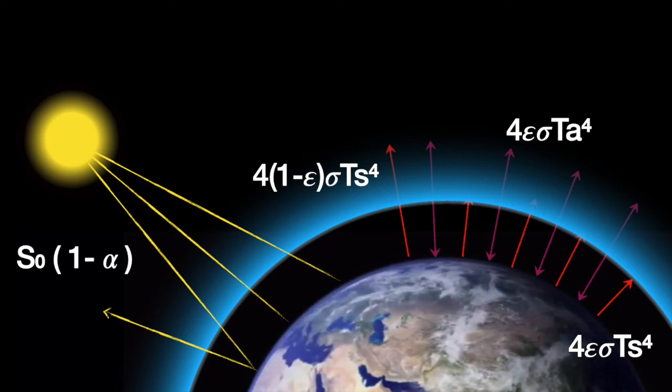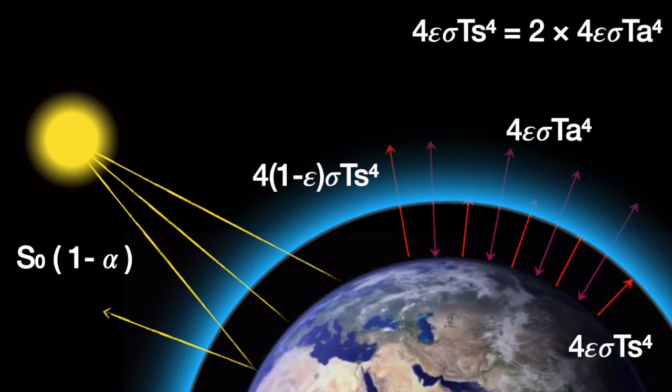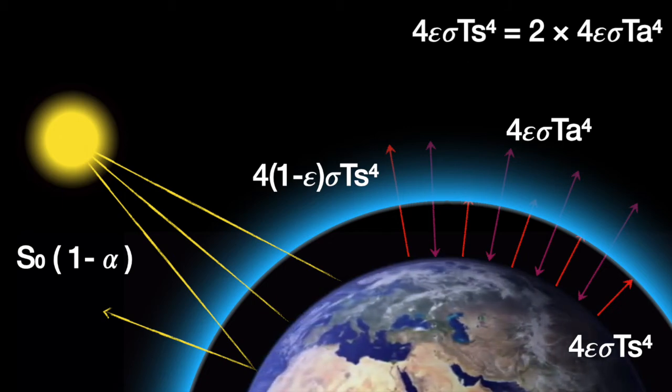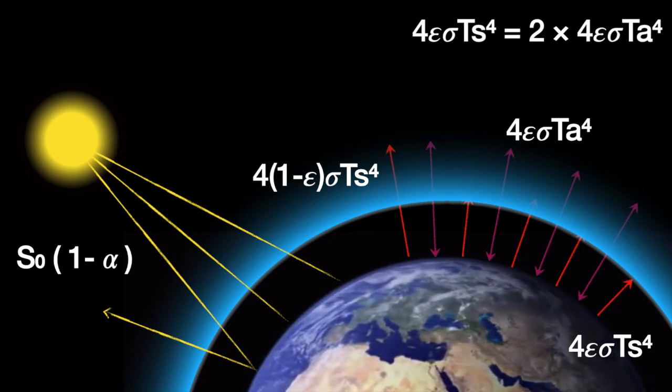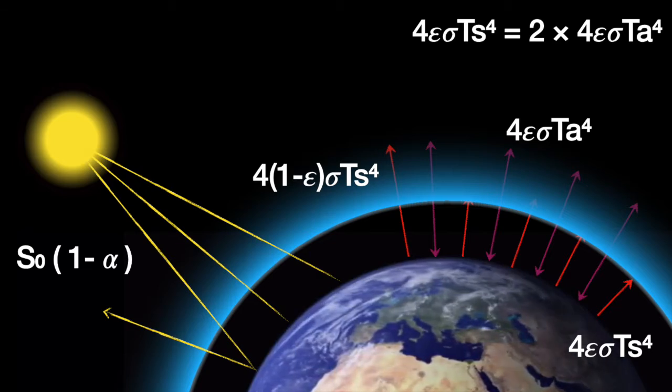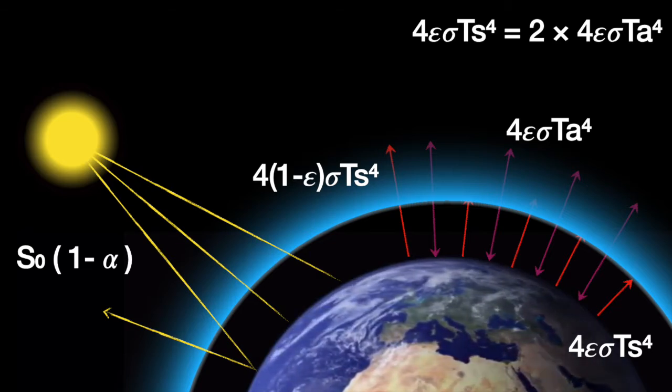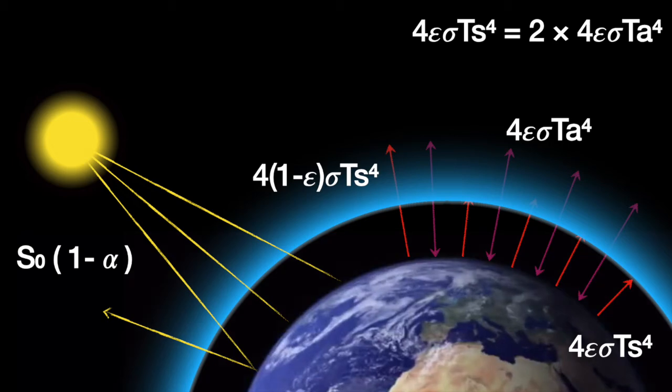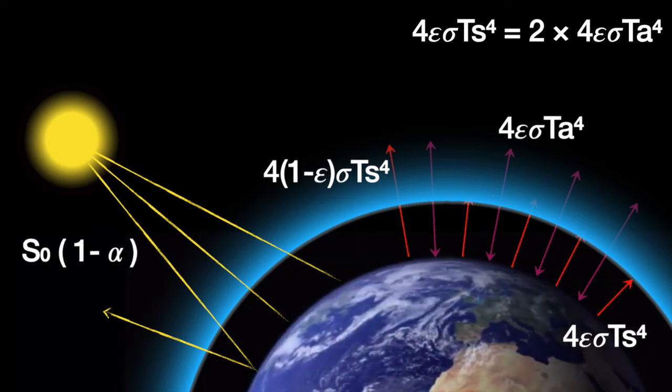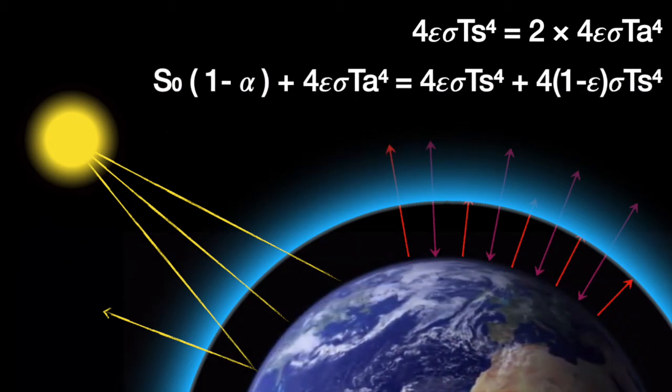We can use these expressions to write an energy balance equation for the atmosphere. We have to include a factor of 2 here because the atmosphere emits heat both upward and downward, even though it only receives heat from the ground.